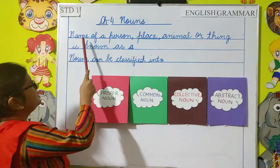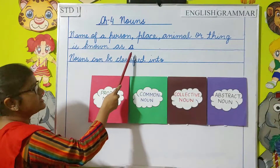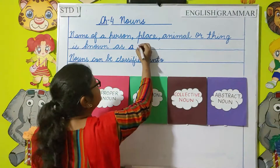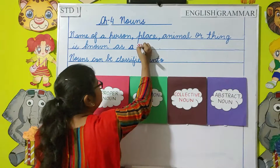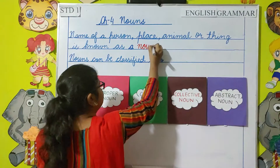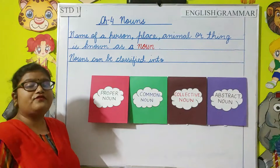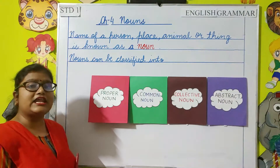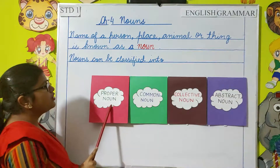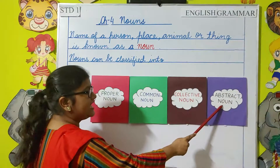So the name of a person, place, animal, or thing is a noun. Now nouns can be classified into proper noun, common noun, collective noun, and abstract noun.